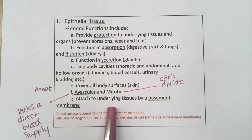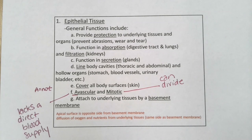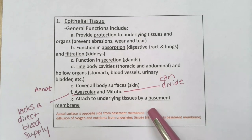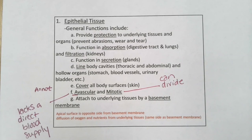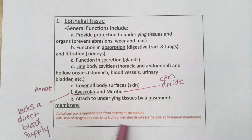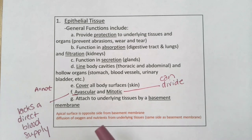Epithelial tissue is attached to its underlying tissues by what's called a basement membrane, which I'll point out on another slide so you can label it. The apical surface is the opposite side of the cell from the basement membrane — you may want to rewrite that term. Because these tissues lack a direct blood supply, oxygen and nutrients must diffuse from the underlying tissues across the basement membrane and into the epithelial cells themselves.